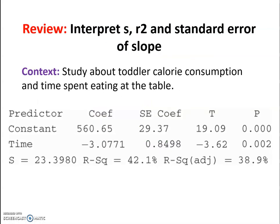So let's just do some recalling, remembering, reviewing. The context here, this data came from a study about toddler calorie consumption and time spent eating at the table. We want to interpret three different things: s, r squared, and the standard error of the slope. So s here is 23.4, r squared is 42.1%, and the standard error of the slope is actually this value right here, 0.8498. So here's how that would work out.